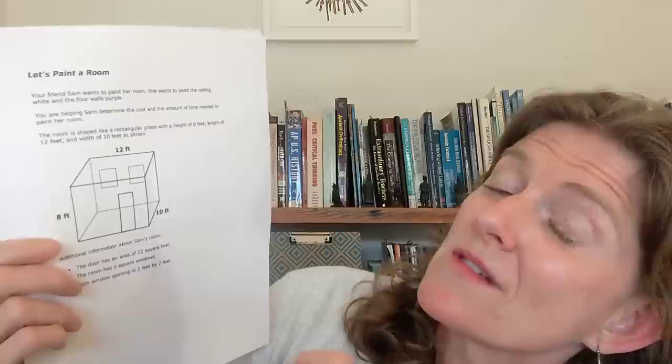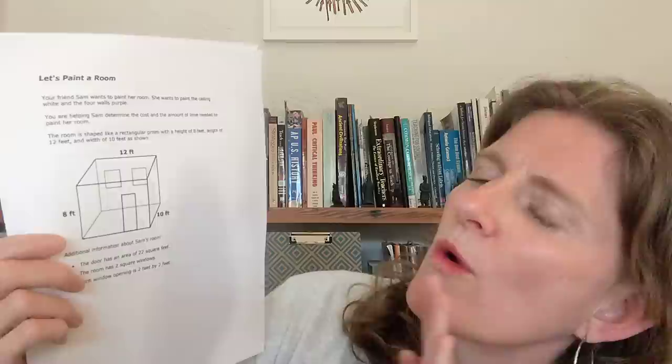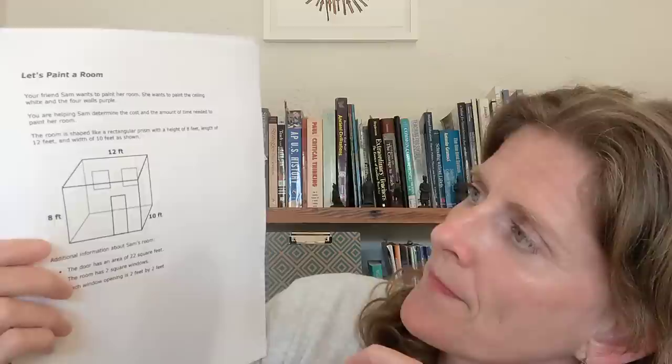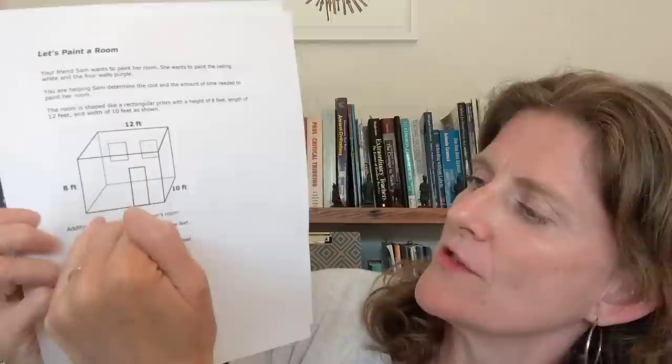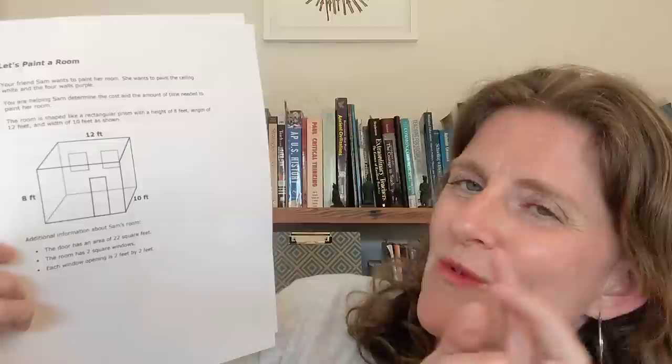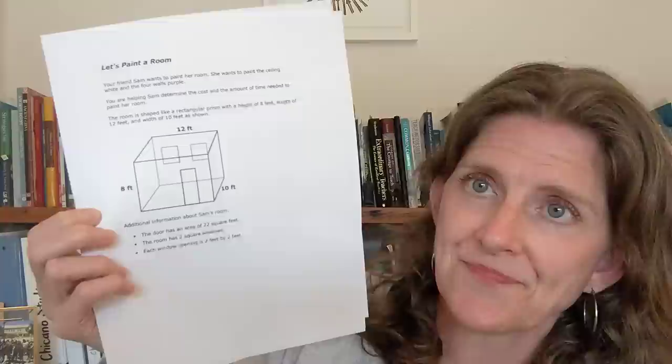Here are some specific real-world scenarios from performance tasks. Let's paint a room. Your friend Sam wants to paint her room — the ceiling white and the four walls purple. You are helping Sam determine the cost and the amount of time needed to paint her room. The room is shaped like a rectangular prism with a height of 8 feet, a length of 12 feet, and a width of 10 feet. Additional details: the door has an area of 22 square feet, the room has two square windows, and each window opening is 2 feet by 2 feet. This is an example of the short, clear information a performance task gives you, and then it asks you four to six questions about it — or three to five if you are in grades 8 or 11.